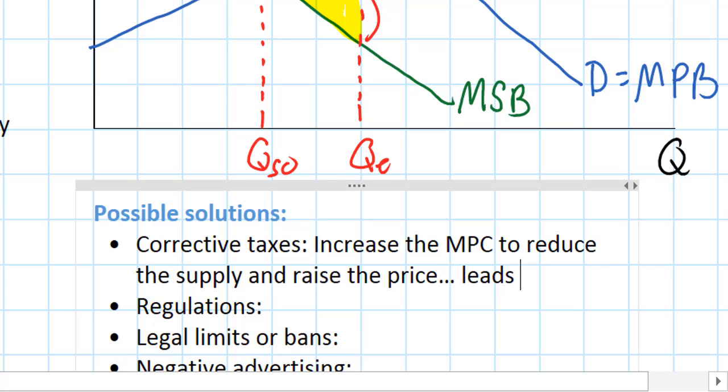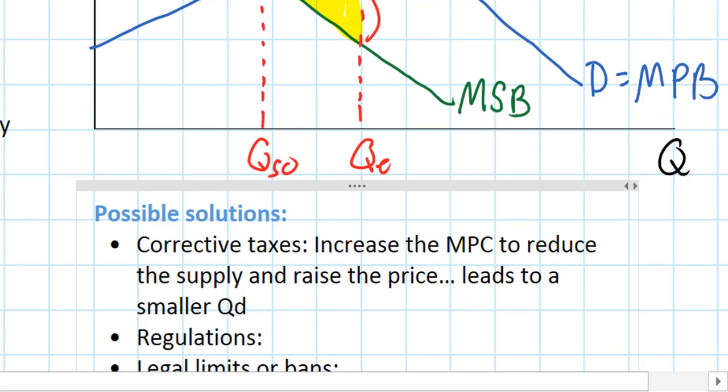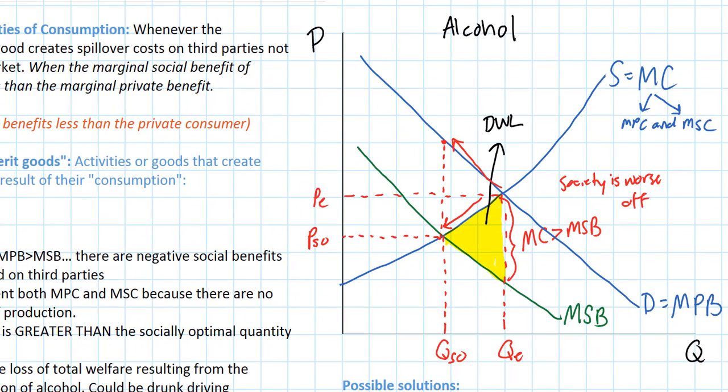This of course leads to a smaller quantity demanded. A corrective tax would have the clear effect of raising the marginal cost to alcohol producers. We could say this would be our supply equals marginal cost with a tax, causing the price to rise and reducing the quantity demanded. So there would be a tax burden placed on consumers and producers of alcohol, but overall there would be an improvement in total welfare because this welfare loss would be eliminated as the quantity decreased to QSO.